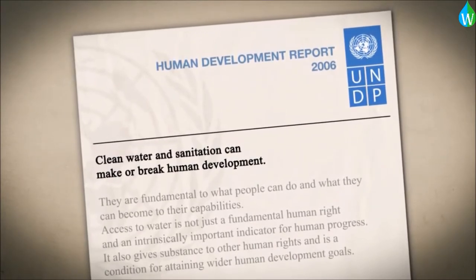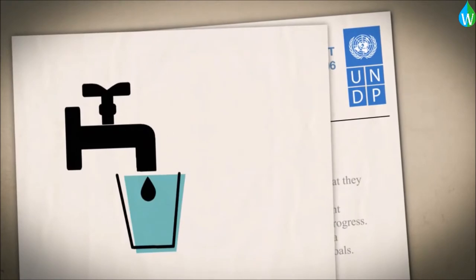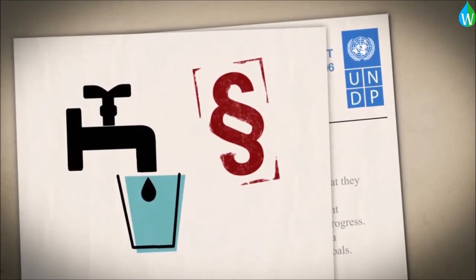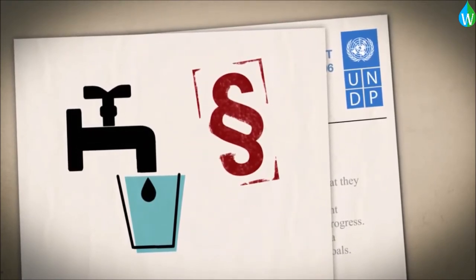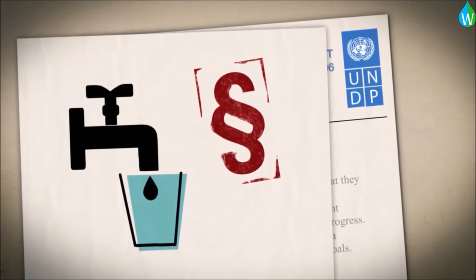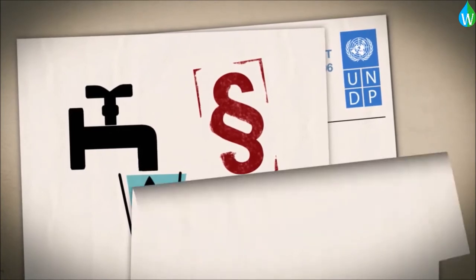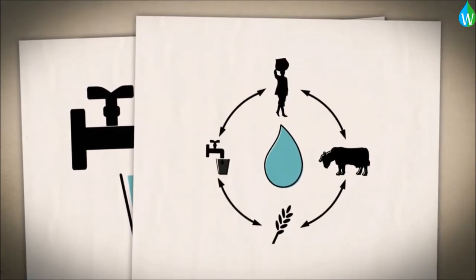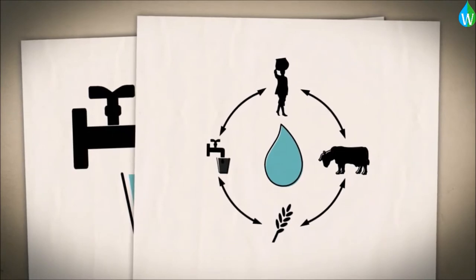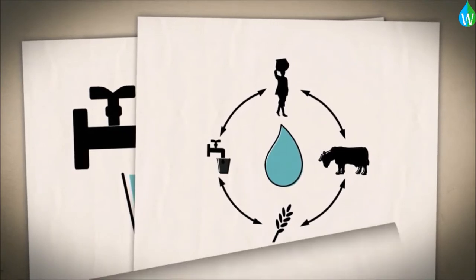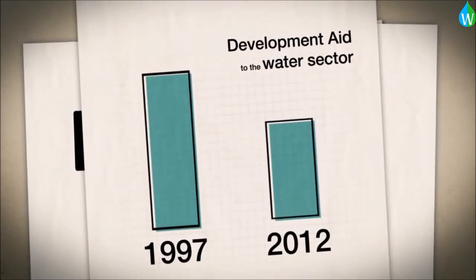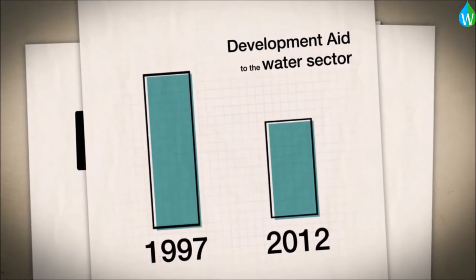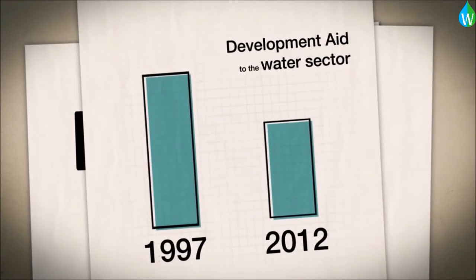Access to clean, fresh water has been given the status of a human right. Nevertheless, the water sector still has a relatively low political priority. Few developing countries have efficient water resource management. Since 1997, the annual share of global financial development aid spent for the water sector has fallen from 8 to 5%.